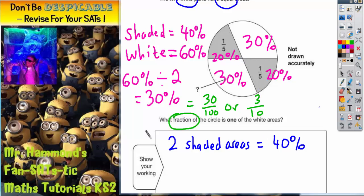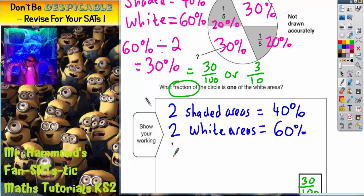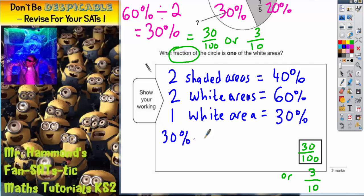So, the two white areas must equal 60%. So, one white area must be half of this. So, that would be 30%. And 30% into a fraction is going to be 30 out of 100 or 3 tenths.